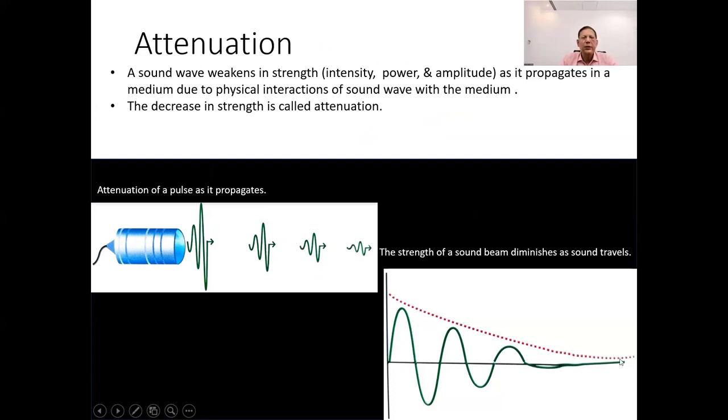Imagine you're shouting across a room. As your voice travels through the air, it becomes quieter. Similarly, when a sound wave moves through a medium like the body, it loses strength. In ultrasound imaging, attenuation affects the clarity of the image.